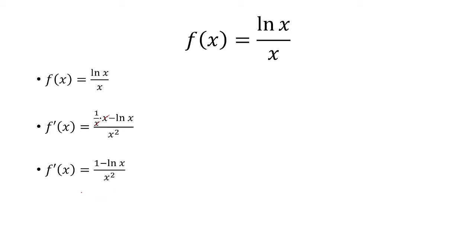The next step is to find the critical points. So we're going to first set this equal to 0. Now multiply both sides by x squared. Add ln of x to both sides. We have ln of x equals 1, and so x is equal to e.